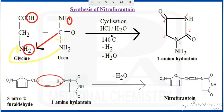To summarize: glycine combines with urea, with removal of one molecule of water and H₂, giving 1-aminohydantoin. That combines with 5-nitrofuran-2-aldehyde, with elimination of one molecule of water, giving nitrofurantoin. That is the synthesis of nitrofurantoin.